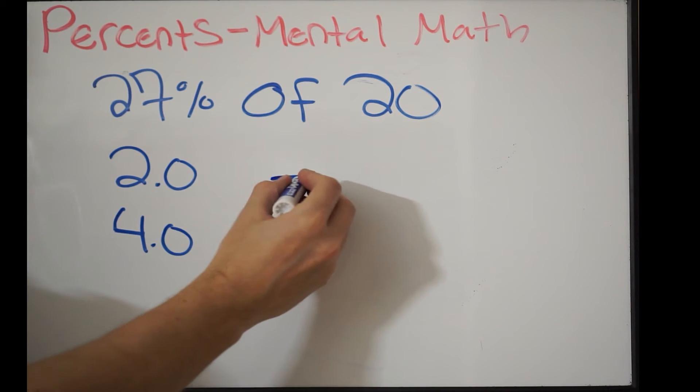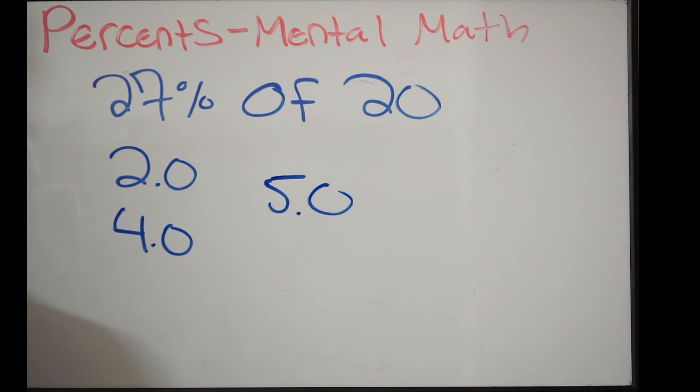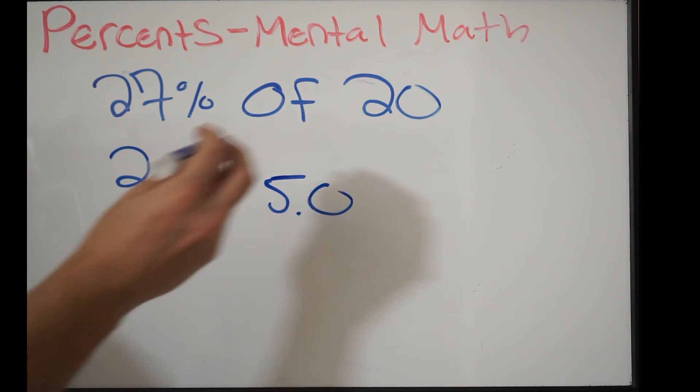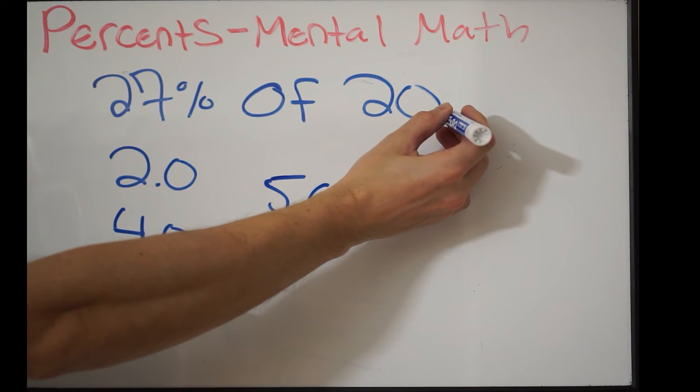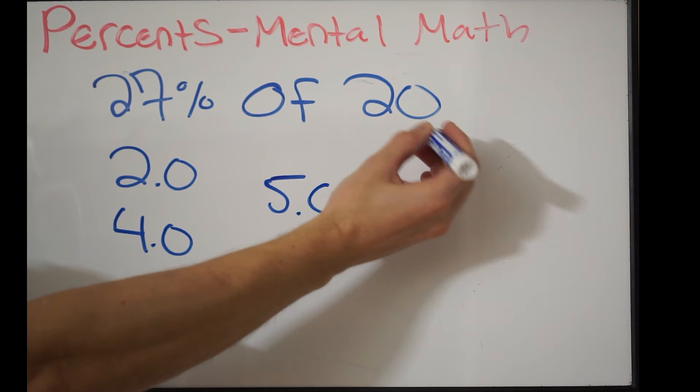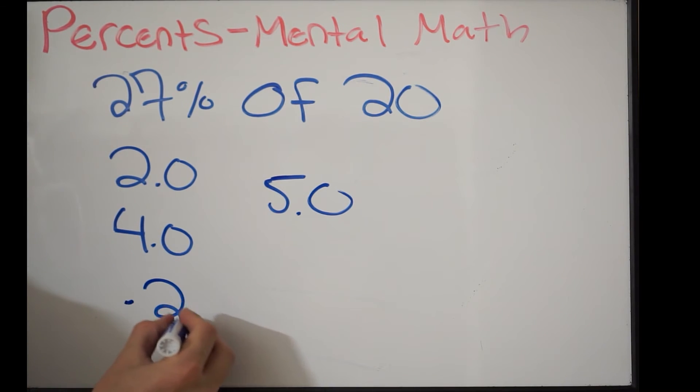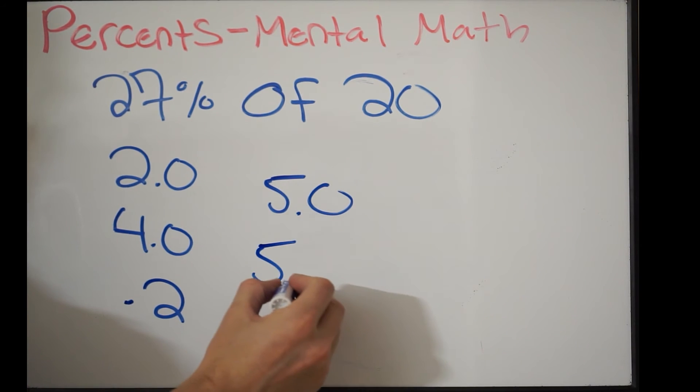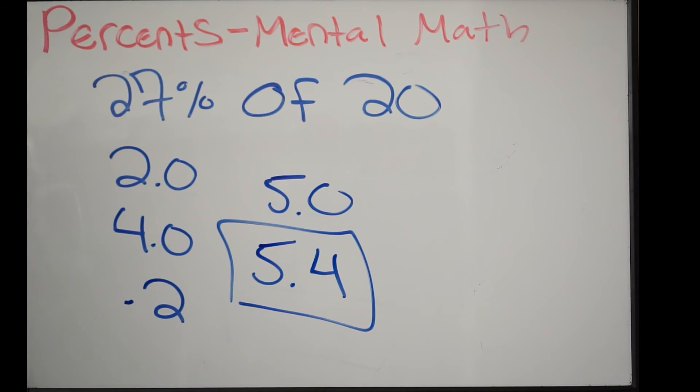So 4 plus 1 is 5.0. That is 25%. We need to take into account the other 2%. To find 1%, I'm going to take this decimal point and move it two places to the left. That's going to give me 0.2. That's 1%. I need to take into account 2%. So this is really going to be 0.4. Add that to 5. So 5.4. That's going to be your answer.